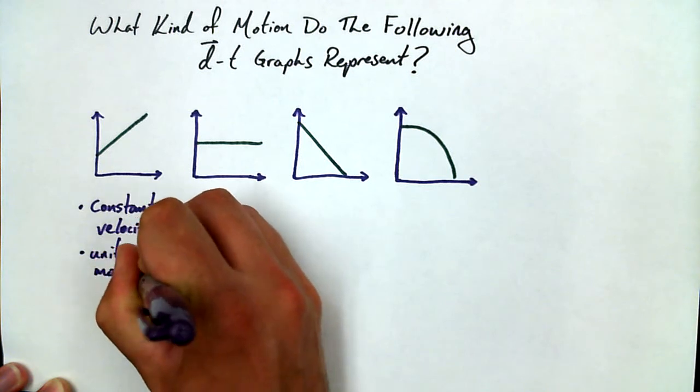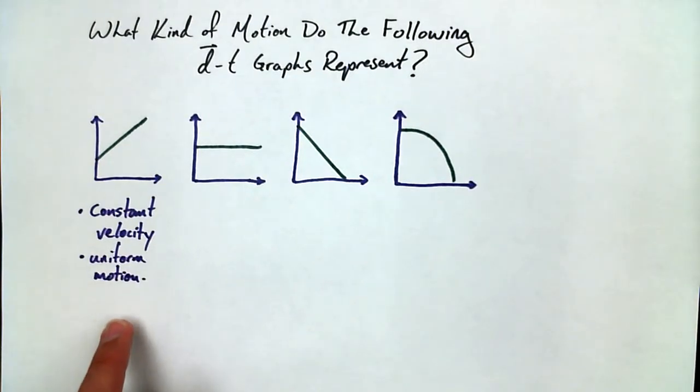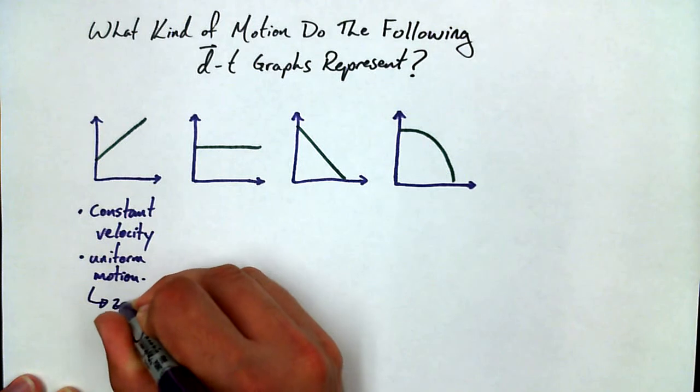Now, constant velocity is fairly descriptive. Uniform motion means what about the acceleration? It stays the same. Not just that it stays the same. It stays the same at one specific value. What's the specific value this acceleration has? Zero. So uniform motion really, for us, means zero acceleration.